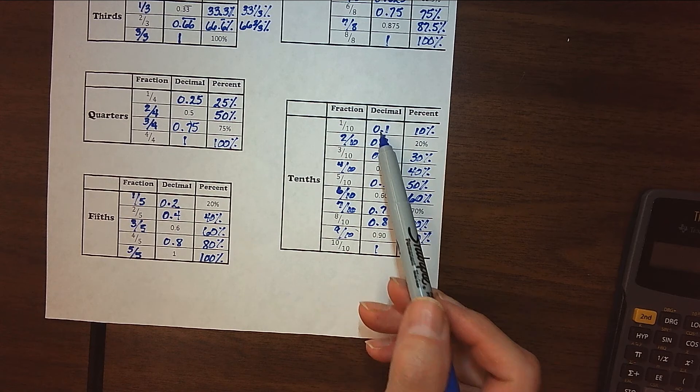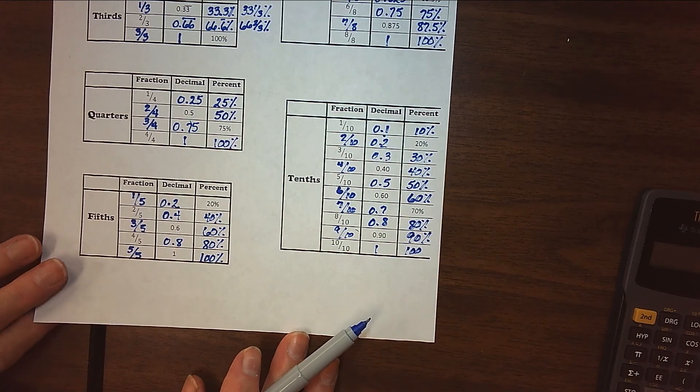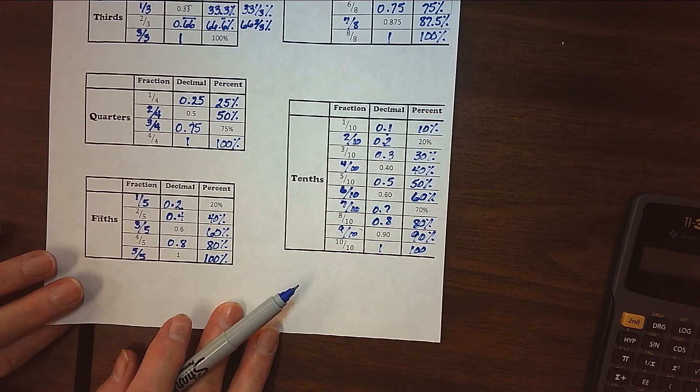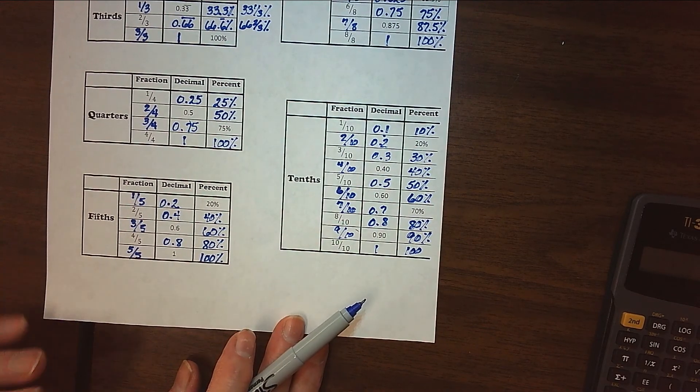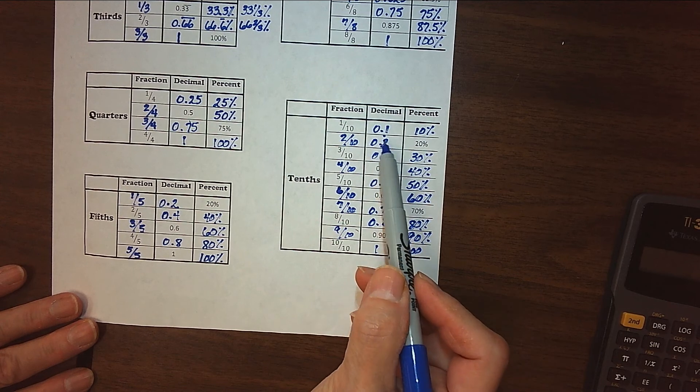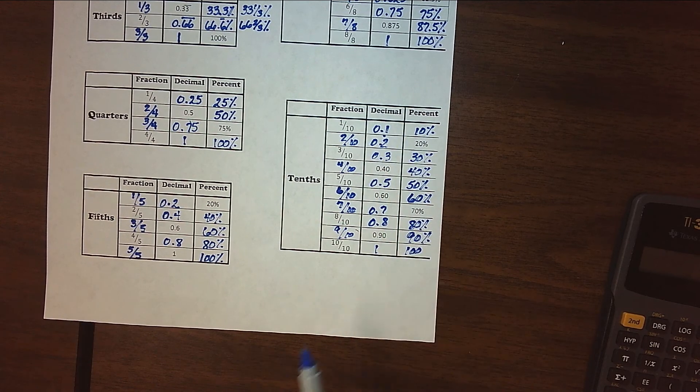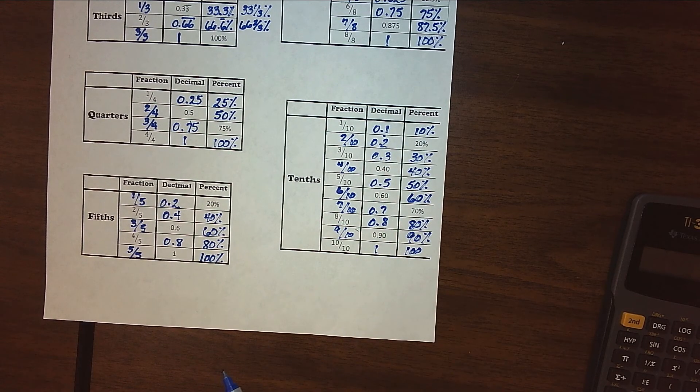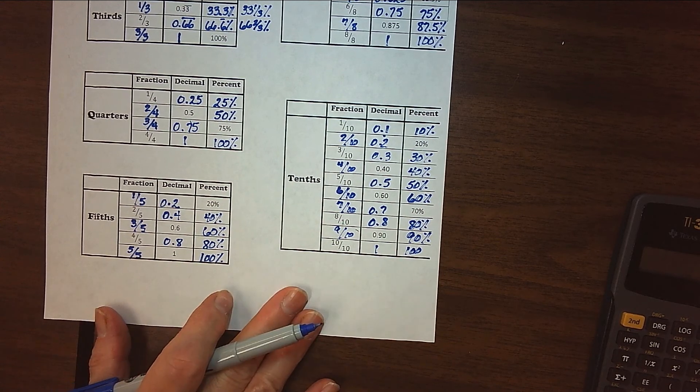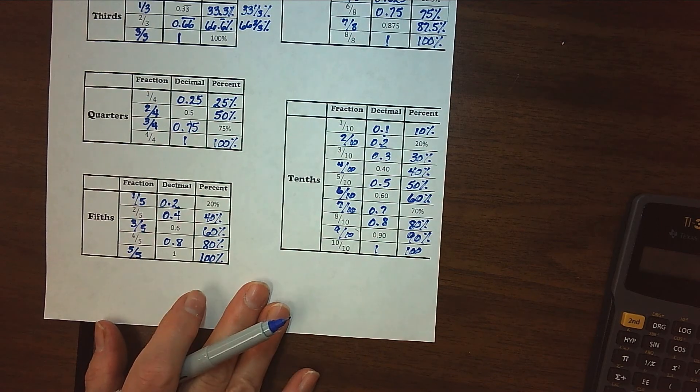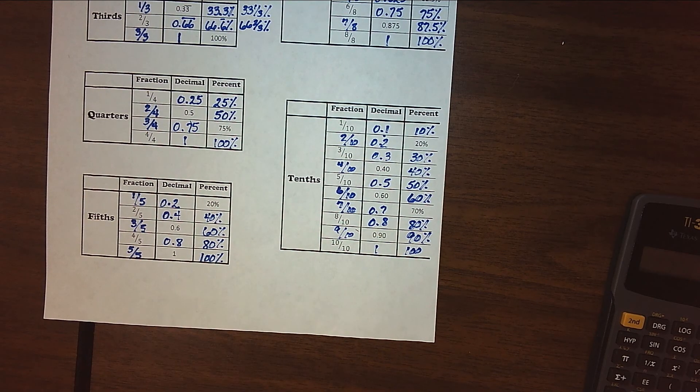And, of course, move the decimal point over two places. So you really already know how to change from a decimal to a percent, which is going to be our next lesson. And that's just to move the decimal point two places to the right. And that's really as easy as it is. So, again, we want to focus on trying to memorize these. We'll practice that a little bit in class, but that's the goal, is to have these memorized. All right, guys. I'll see you next time in class. Have a great evening, and I will see you tomorrow.